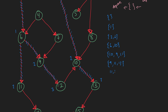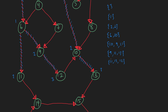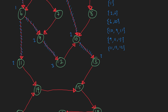Our queue now looks like: 11, 13, 12. Next is 11 — we dequeue 11 and enqueue 14, which is a distance of 3. So now the queue has 13, 12, and 14.